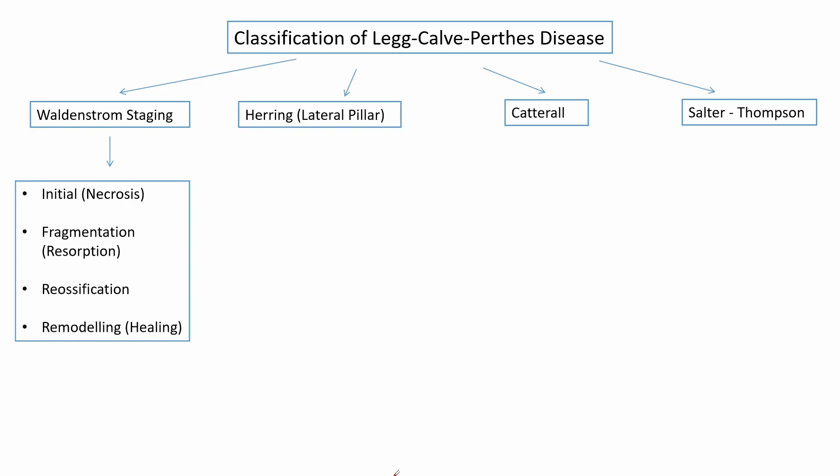The fourth stage is the remodeling stage. After reossification, the head is often misshapen — enlarged or flattened. The remodeling stage attempts to remodel the head and shape it according to the correct shape of the femoral head.